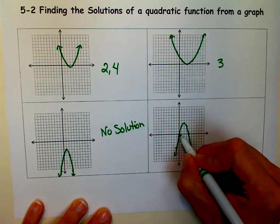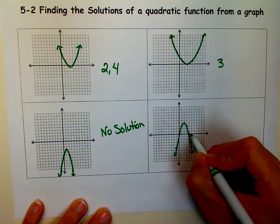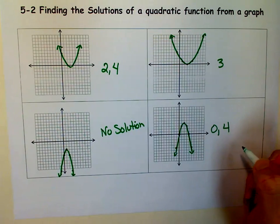And then here, it crosses at 0 and at 4, and that's what you have to do.